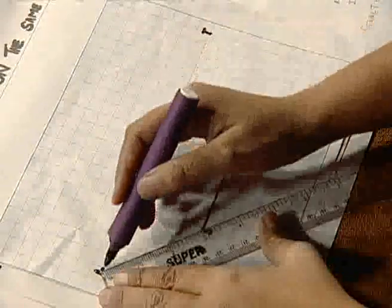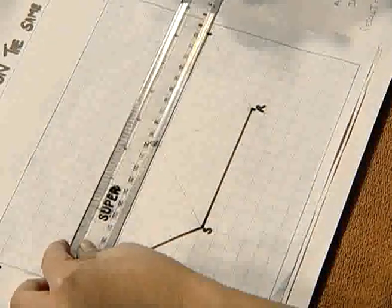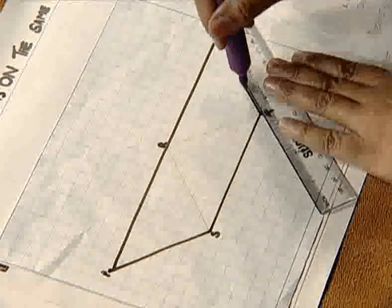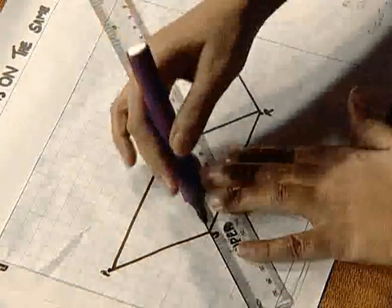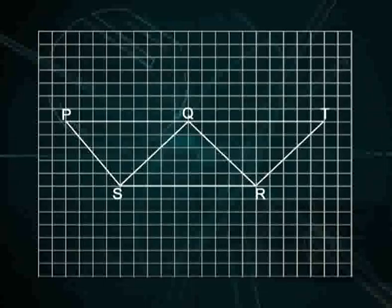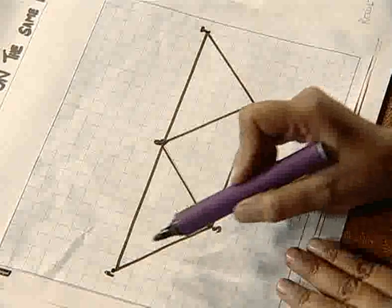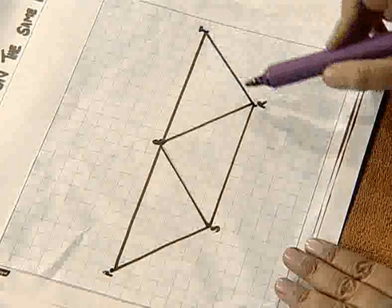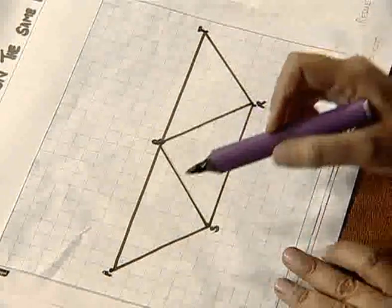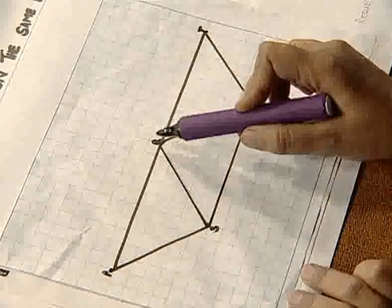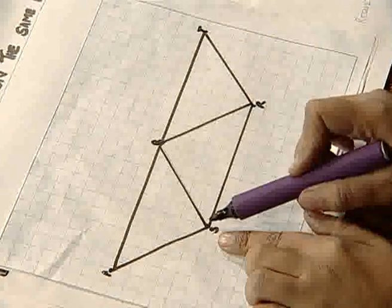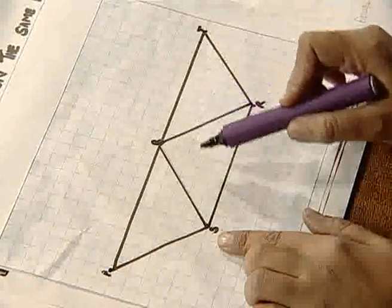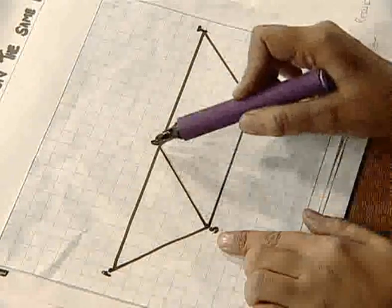We draw their sides by joining the marked points. Now we observe that two parallelograms — PQRS and QTRS — are each made up of two triangles. Parallelogram PQRS is made up of triangles PQS and QRS, and parallelogram QTRS is made up of triangles QTR and QRS.